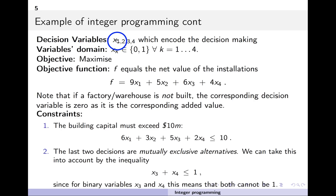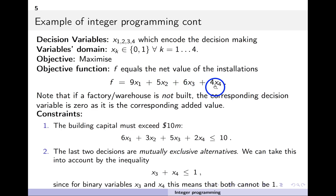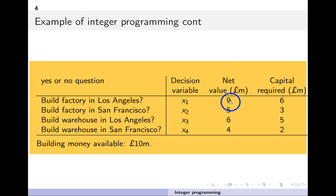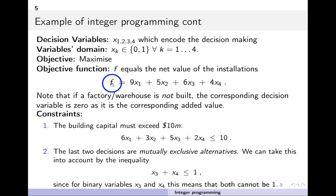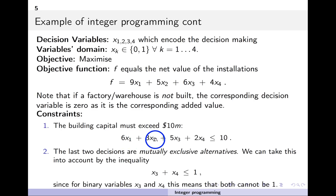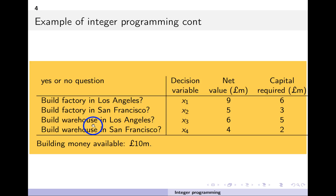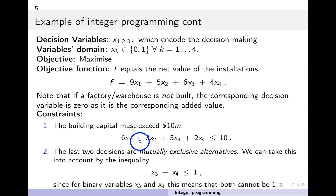The decision variables are either zero or one, and there are four of them. The objective is to maximize the net value of the installations. The objective function is f equals 9x1 plus 5x2 plus 6x3 plus 4x4, where the coefficients 9, 5, 6, and 4 come from the net value table. The capital constraint is that building capital must not exceed the budget of 10 million: 6x1 plus 3x2 plus 5x3 plus 2x4 is less than or equal to 10.